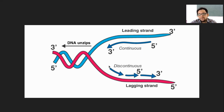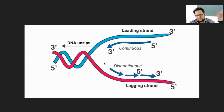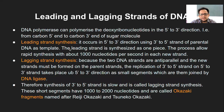That is when there is another strand formed which we call the lagging strand. DNA polymerase still acts in the 5' to 3' direction, but in a reverse manner. You can see the arrow shown here — in this other strand which is the lagging strand, DNA polymerization happens in the reverse direction, but in pieces. That is why it is also called the discontinuous or lagging strand.